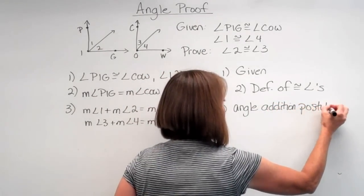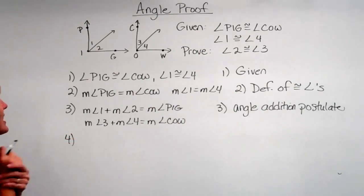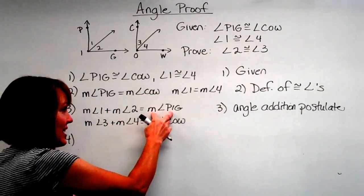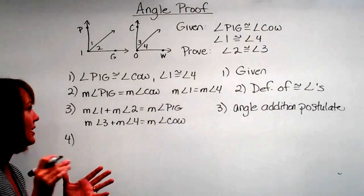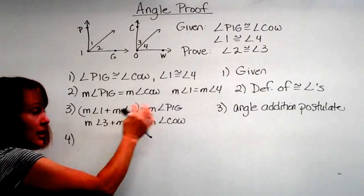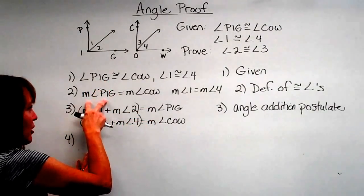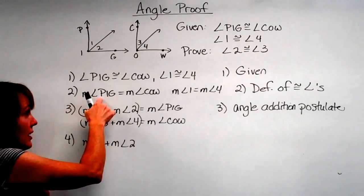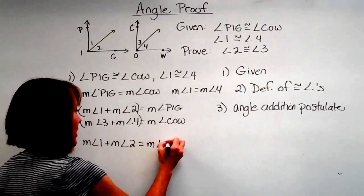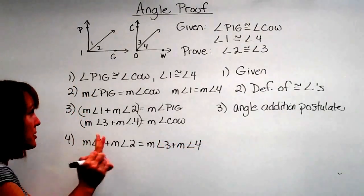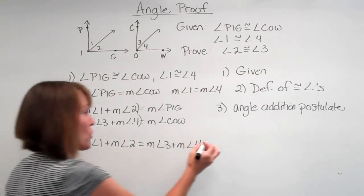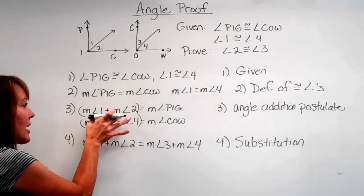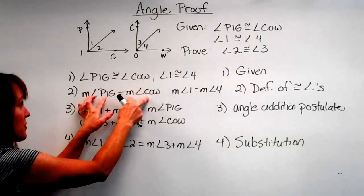The angle addition postulate — why does this help us? We know that the measures of angle PIG and angle COW are equal. So if the big angles are equal, then instead of writing the measure of angle PIG I can substitute: the measure of angle one plus the measure of angle two equals the measure of angle three plus the measure of angle four, since those are what PIG and COW equal respectively. We're substituting the little pieces in for the big pieces since they're equal — we're using substitution. This is the hardest one for students to see.